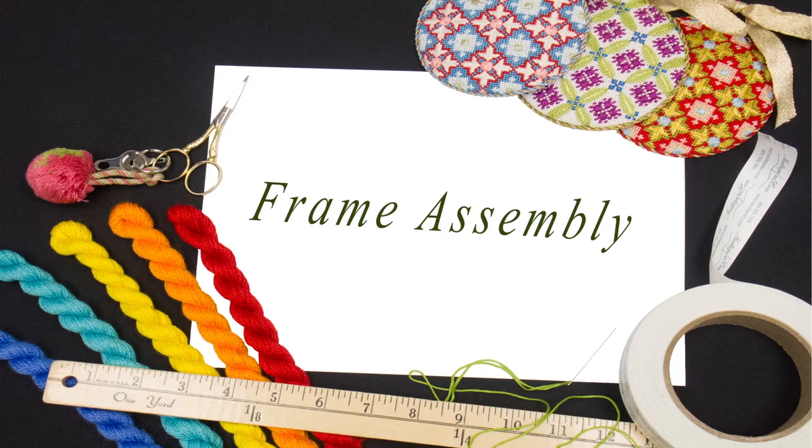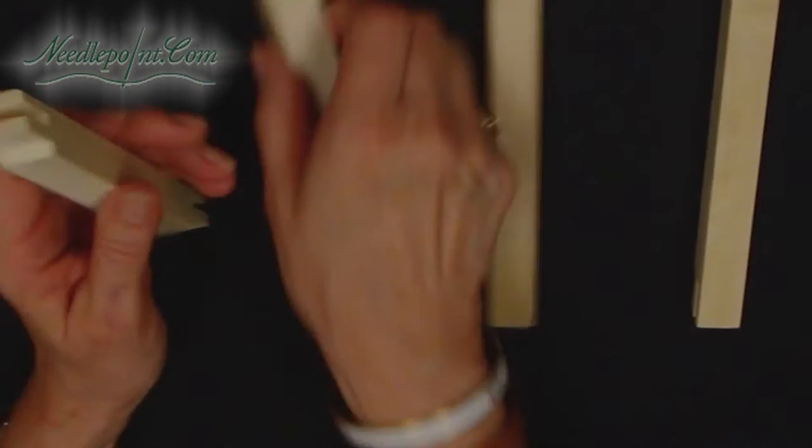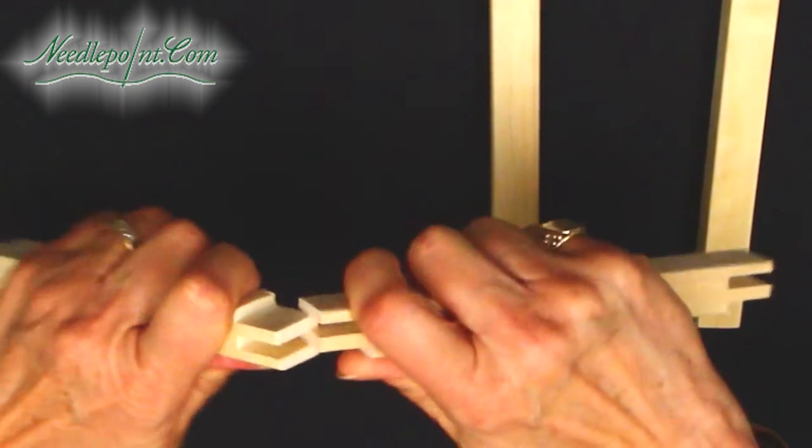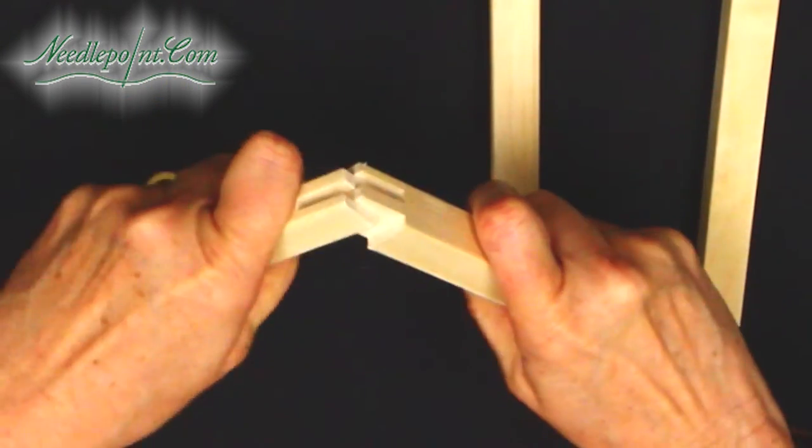Frame assembly. You need your stretcher bars to form a square around your design. In our case, we plan to build an even square with stretcher bars that are the same length.